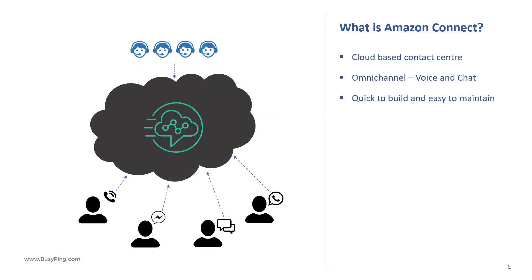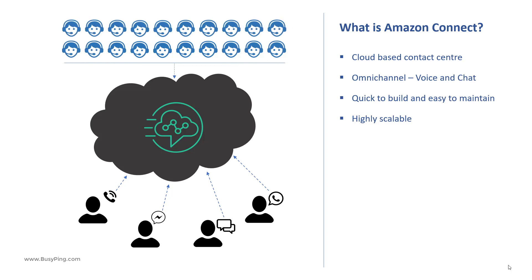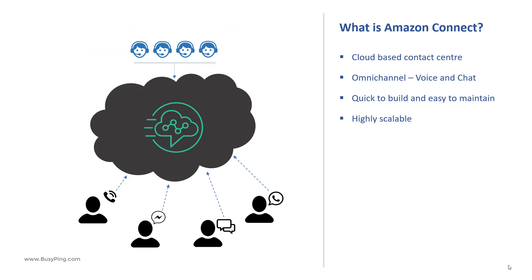Amazon Connect is highly scalable. You can start with just a few call center agents and rapidly scale up to thousands of agents if the call volume increases, and scale down to the original count when the call volume decreases. This is very helpful for special events such as Black Friday sale or Christmas sale where you know the call volume is going to be high.